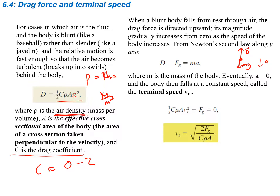Applying Newton's second law along the y-axis: drag minus gravity equals ma. As you increase drag, you decrease the acceleration. Eventually the acceleration equals zero — the drag force and gravity cancel each other out. When that happens, it's called terminal speed. This is the fastest the object can go, determined by its geometry — the cross-sectional area — and the drag coefficient.